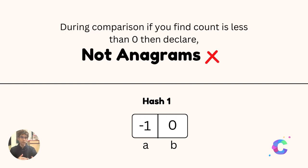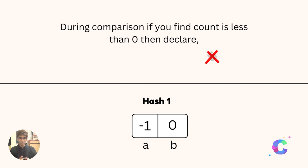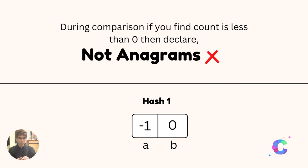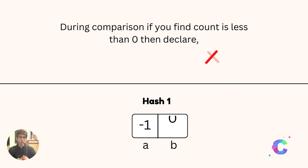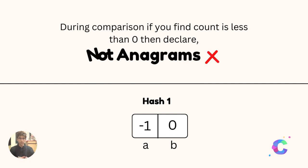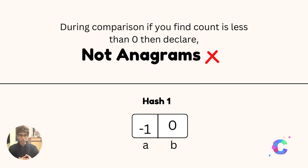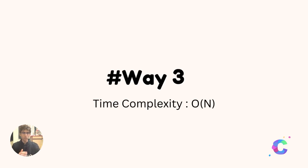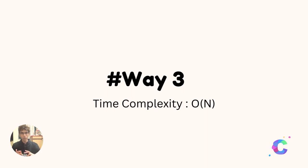If during comparison we find that an element is less than 0, presenting a negative value, we can say that both the strings are not anagrams of each other. In this way you can analyze how to solve the anagrams. The time complexity through this way is also O(n), but we are maintaining only one hash table here, whereas in way 2 we were maintaining two hash tables. And the first way is not the best approach.